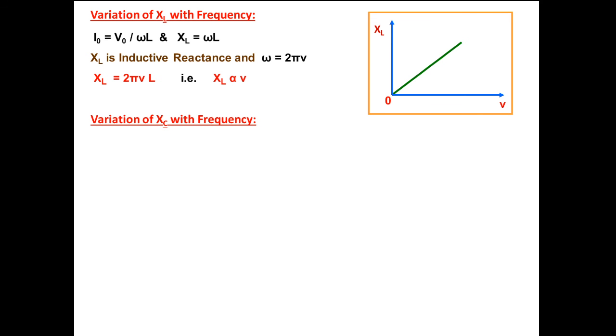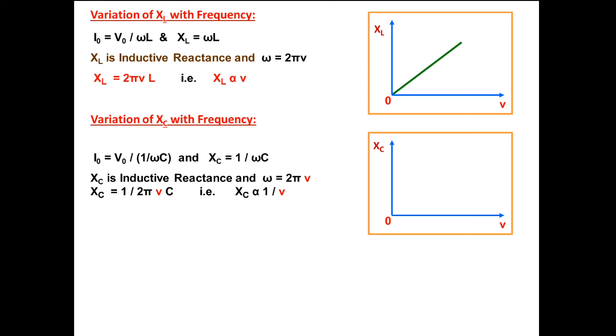Similarly, see the variation of capacitive reactance with frequency. We have already seen XC equals 1 by ωC, where XC is capacitive reactance and ω equals 2πν. So XC is inversely proportional to frequency, so its graph will be rectangular hyperbola. Here again, a correction: that is capacitive reactance. This is all about AC through R, AC through L, and AC through C.